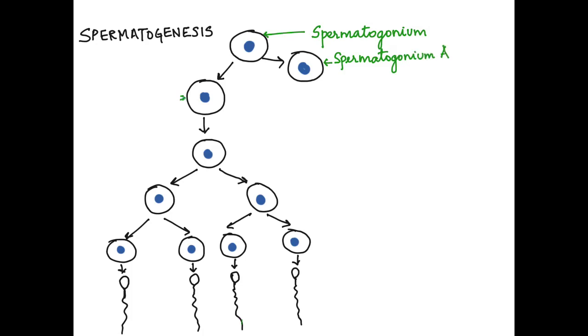There is a spermatogonium A and a spermatogonium B. Spermatogonium A further divides to give rise to more spermatogonium. Spermatogonium B differentiates to form the primary spermatocyte.